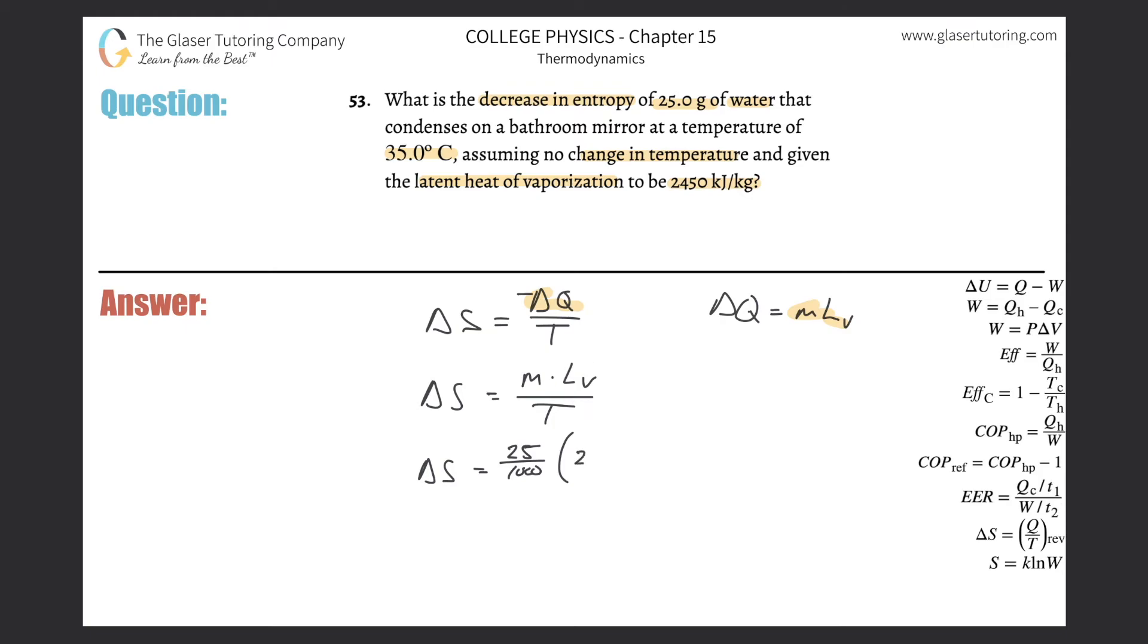Then we multiply by the latent heat of vaporization, which is 2450 kilojoules, but we need that in joules, so multiply by 1000. Then divide by the temperature, which has to be in Kelvin, so this is 35 plus 273.